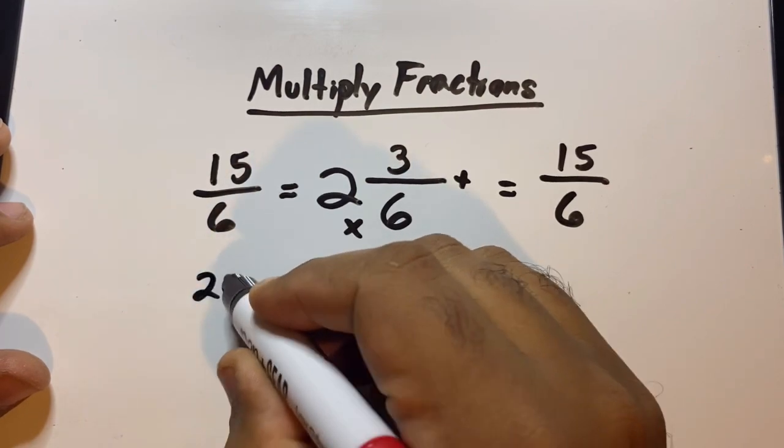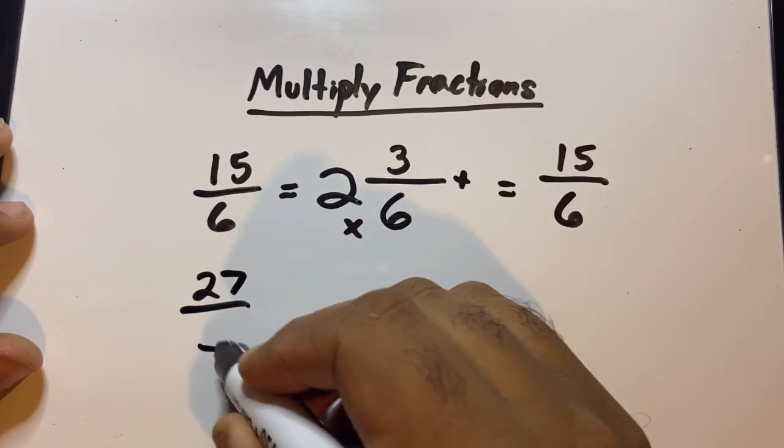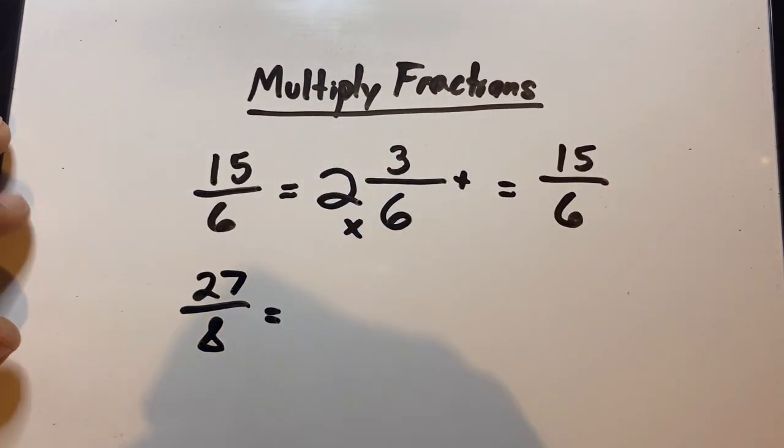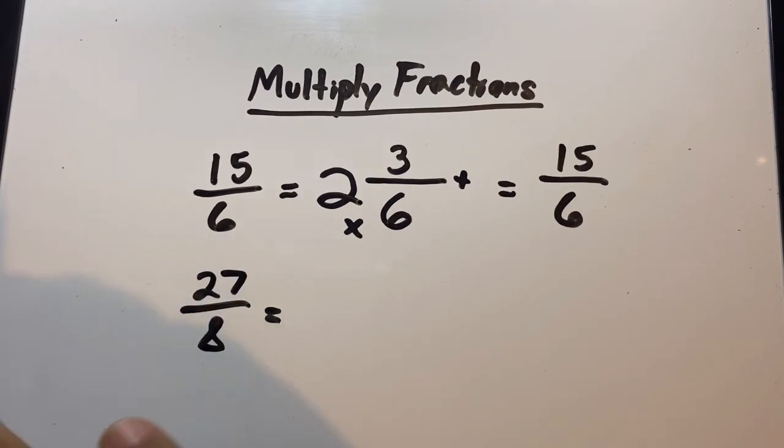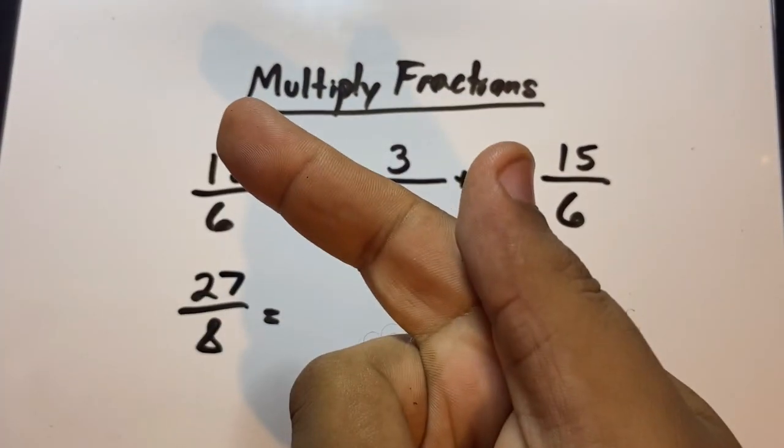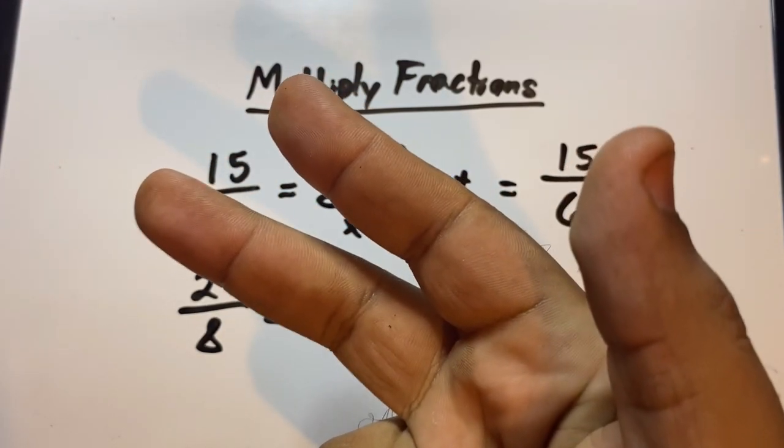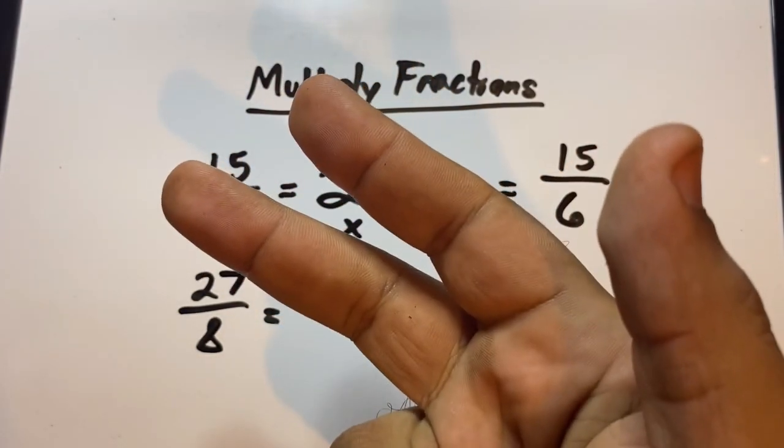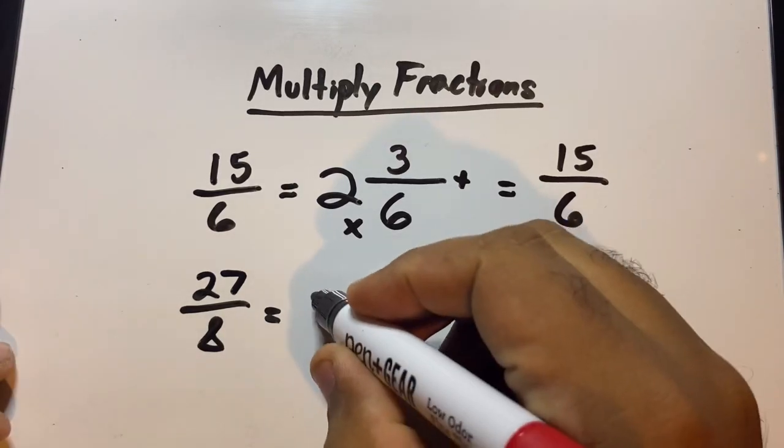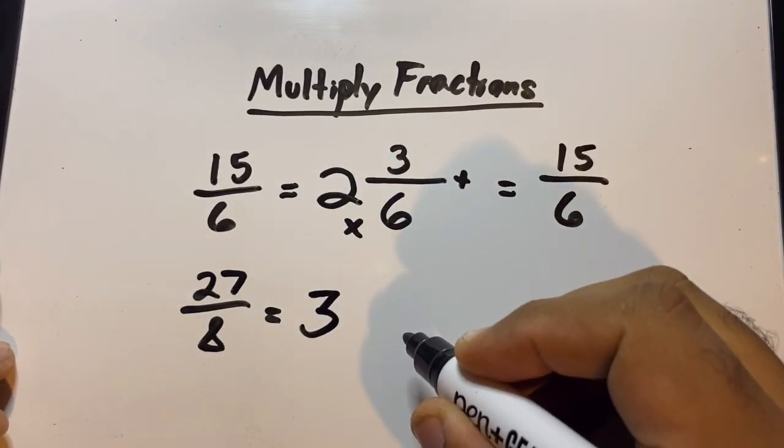Let's make it 27 over 8. If you know your multiplication tables of 8, just count by 8s. So we know there's 8, 16, 24. And now we know that 8 can go inside 27 only 3 times, so that 3 becomes the whole number.